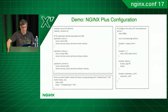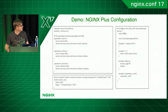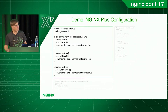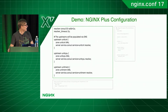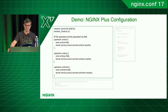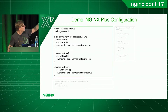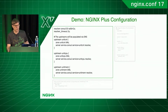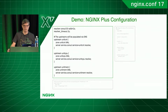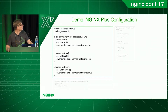I'll briefly go through the configuration — this will all be in Docker Hub after the conference. I've kept it intentionally as few lines as possible while still making it clear. Here's where I define my upstreams. The 'resolver consul valid=2s' tells NGINX to use Consul as its DNS and dynamically re-resolve all domain names every two seconds, ignoring the TTL.